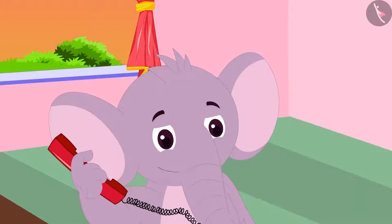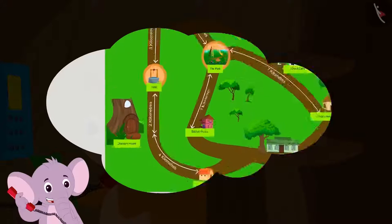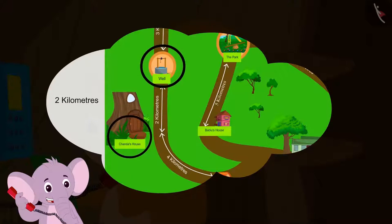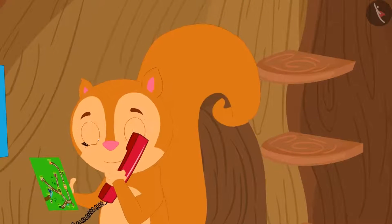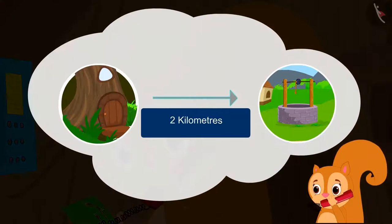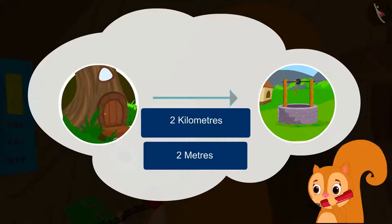Appu asked Chanda if she could spot her house on the map, then told her to come two kilometers straight from there and she would reach the well. Chanda thought she had heard Appu wrong and told him, I think you mistakenly said two kilometers in place of two meters.